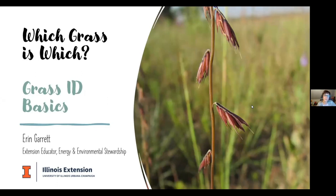We're going to focus on about 13 different species profiles. Like most programs, I like to deliver this one in person where we take a hike and look at grass samples. Hopefully when we can meet safely again in person, next summer or fall, I'd be happy to do an in-person grass ID program and have many of you come out and join us.